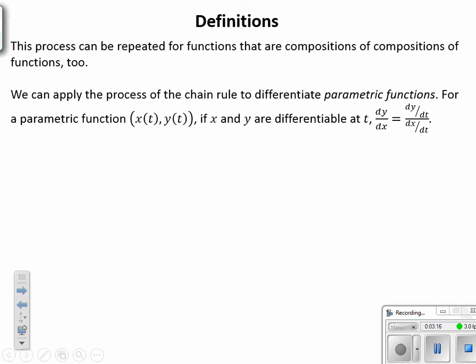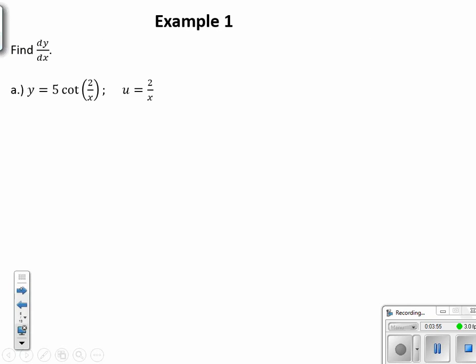This process can also be repeated if we have functions within functions within more functions — more links to our chain. And furthermore, we can apply the chain rule to parametric functions, where each point x is its own function and each point y is found by its own function. If those two functions are differentiable at a certain parameter t, then dy/dx equals dy/dt over dx/dt — very much like dealing with a chain rule problem, because it is a chain rule.